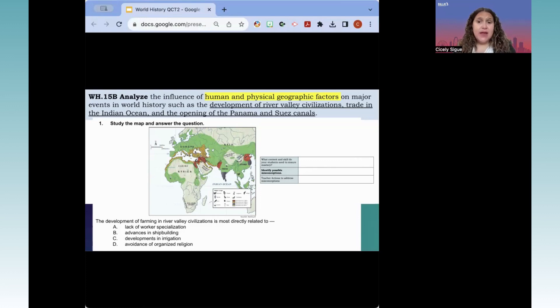As we look at this question, our focus is to identify possible misconceptions. This question is about development of early river valley civilizations. It says the development of farming. The only correct answer here that relates to human and physical geographic factors would be the development of the irrigation systems. What are some possible misconceptions students may have? Students may not understand the difference between human and physical geographic factors. Your human geographic factors are going to be any type of adaptation to land or modification to land. Your physical is going to be mountains, rivers, deserts.